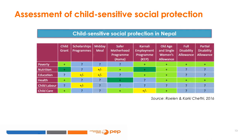This slide includes an assessment of the child sensitivity of social protection in Nepal, undertaken in collaboration with Save the Children. Using secondary information, the research assessed the extent to which key social protection programs contributed positively or negatively to a range of children's outcomes. Using a traffic light system, the table indicates whether reported impacts were positive overall, whether positive effects were balanced against negative effects, or whether the impact was unclear. Findings indicate that while a scholarship program had mixed effects, an old age pension had mostly positive effects. In this case, the very small amounts awarded through the scholarship scheme offered no substantial benefit, while the old age pension was often used by beneficiaries to support their grandchildren.